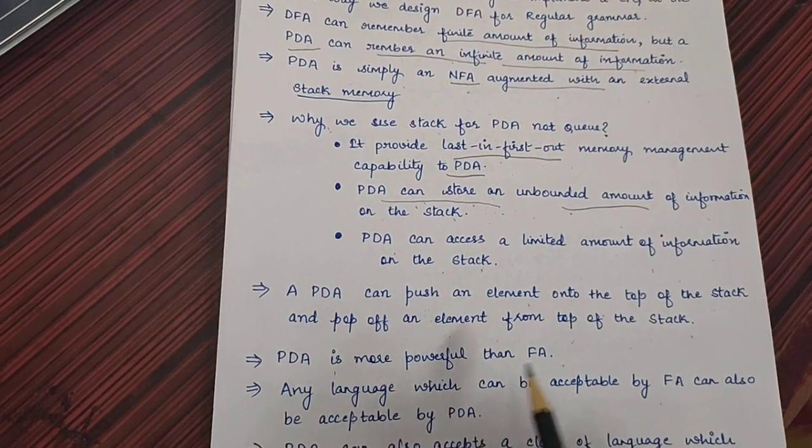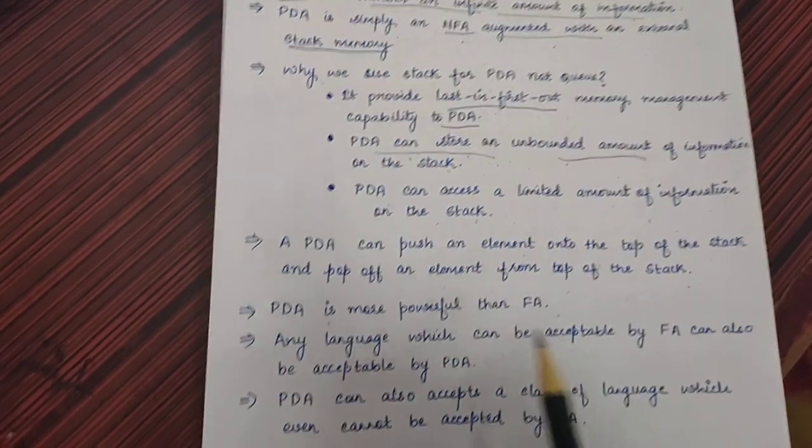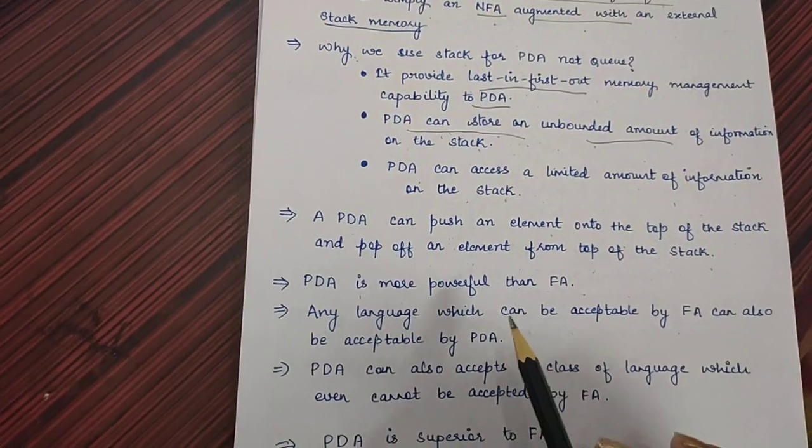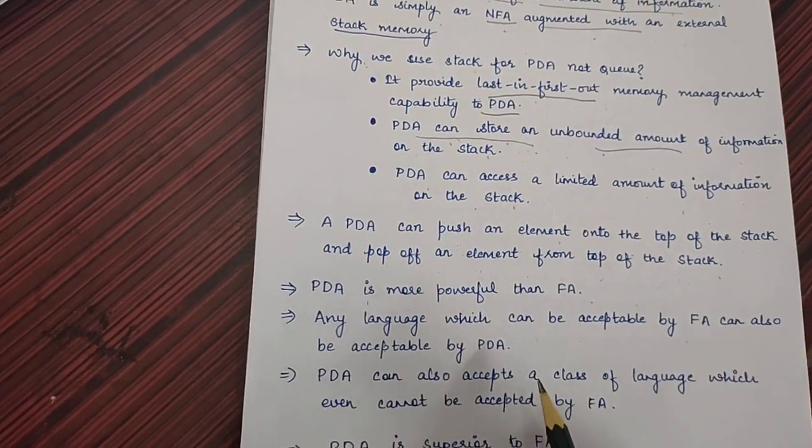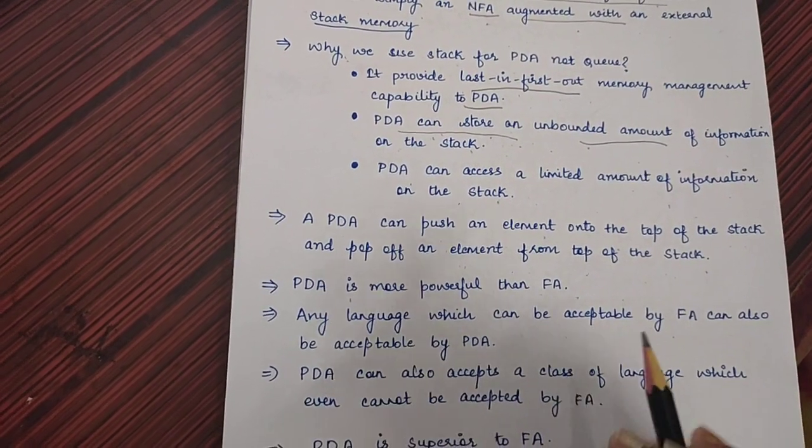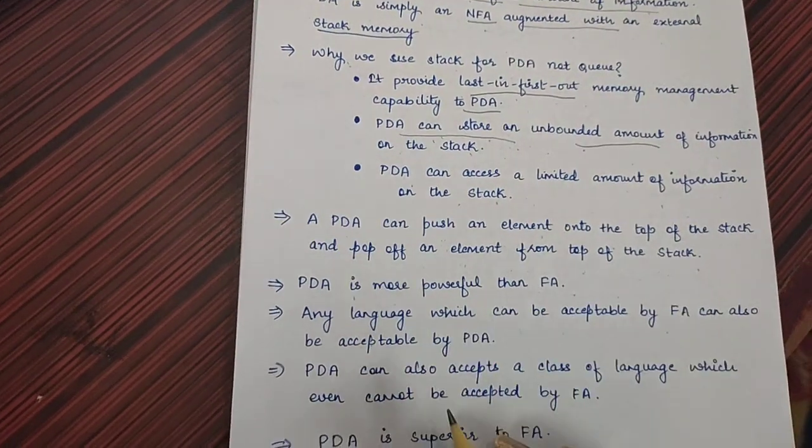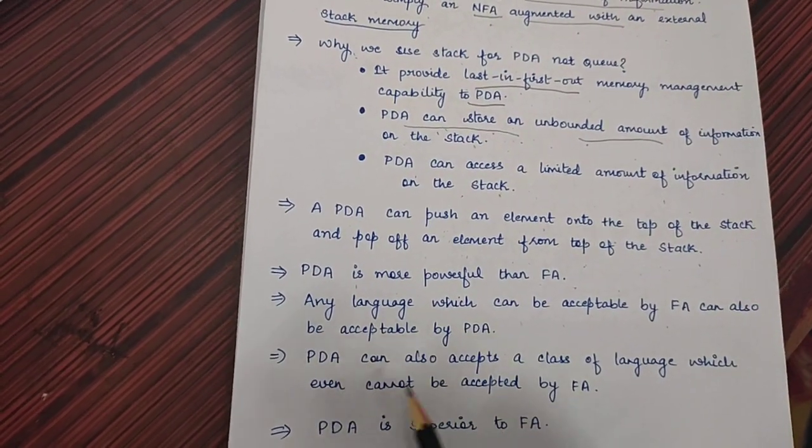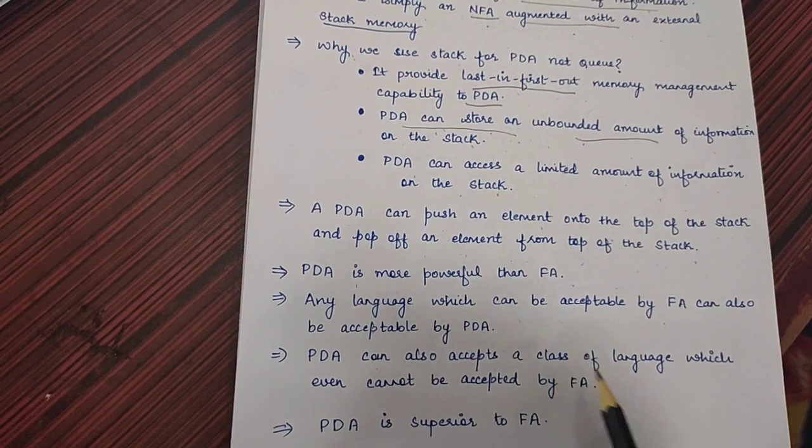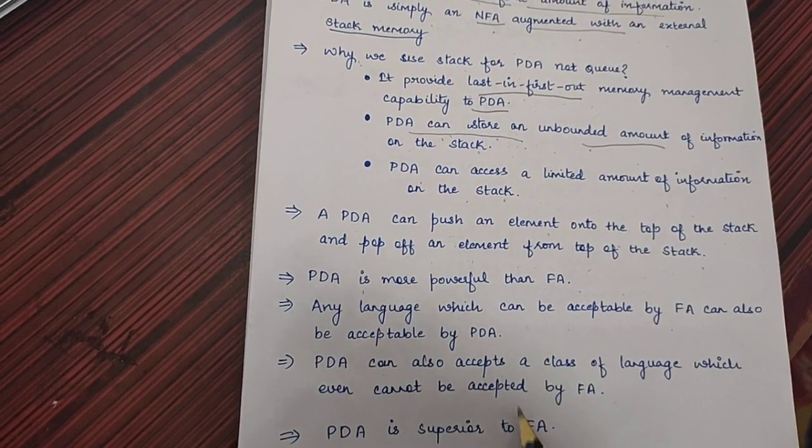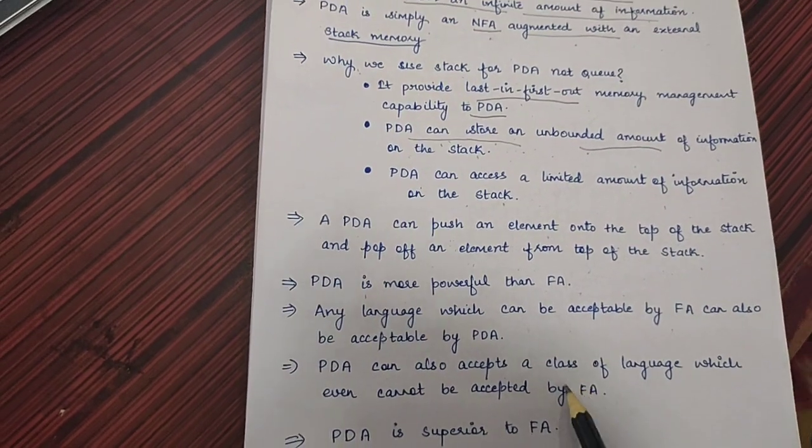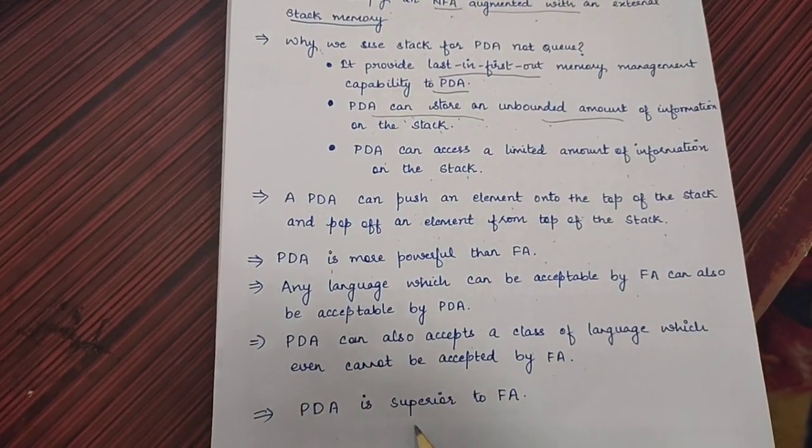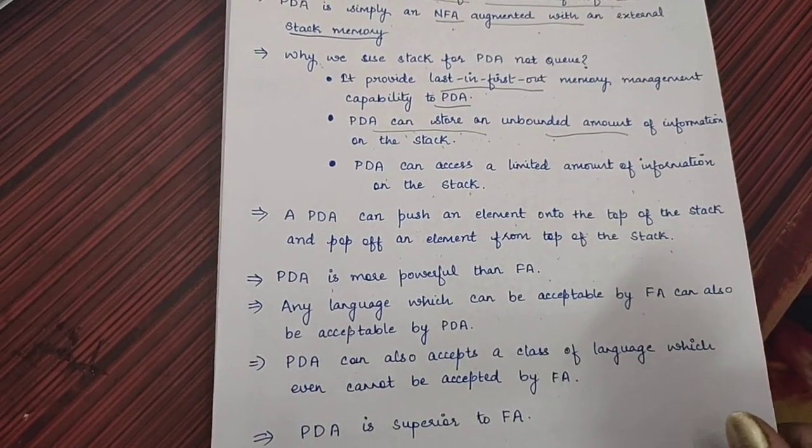That's why it is more powerful than finite automata. Now, any language which is accepted by finite automata can also be accepted by pushdown automata. But if you think vice versa, the answer is no. Pushdown automata accepts a class of language which cannot be accepted by finite automata. And that's why pushdown automata is superior to finite automata.